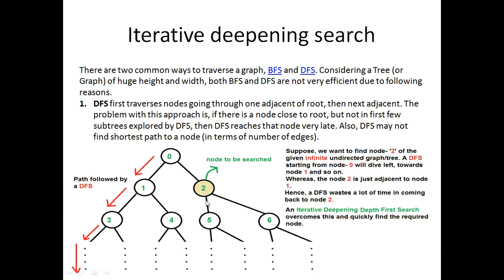Suppose this is the tree structure in which we want to find a node just below the root on the right-hand side. But in case of DFS, when it traverses, it goes through one adjacent node of root, then the next adjacent. From root it goes to one, then three, then to the adjacent nodes and keeps continuing. If this tree is very huge, even though our target is very near to root, we are not able to find it in a specific time period. This is one problem of depth-first search—it takes a lot of time.